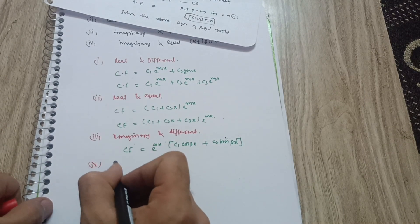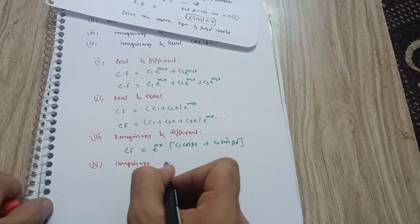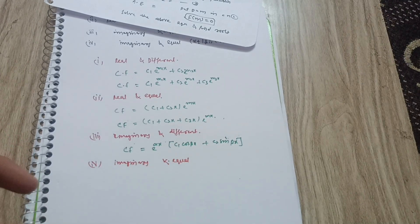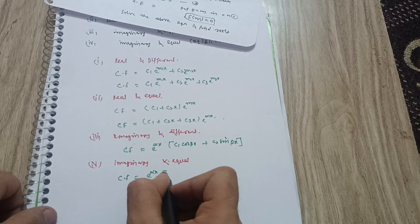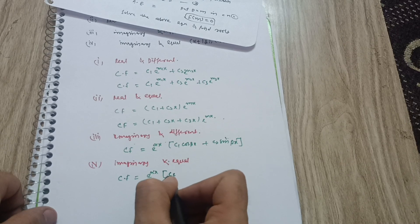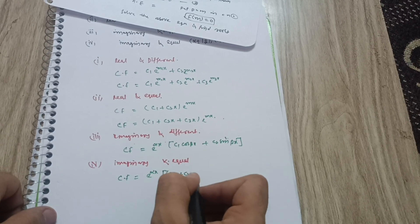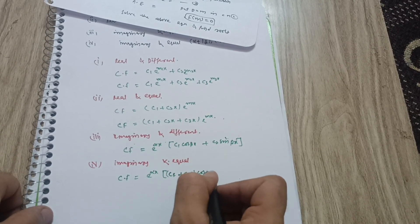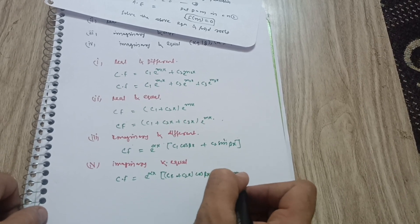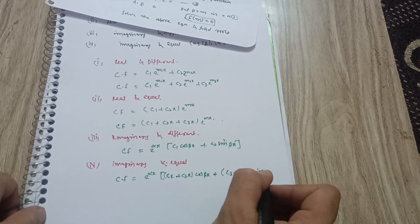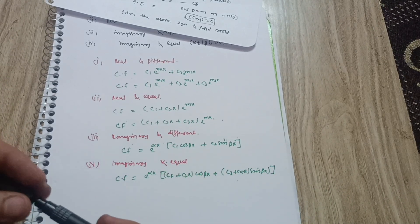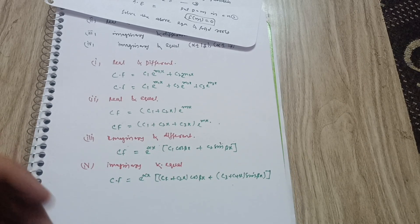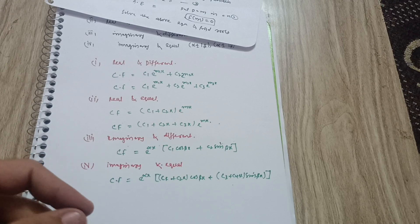For imaginary and equal roots, the complementary function is: CF = e^(αx) · [(c₁ + c₂x)·cos(βx) + (c₃ + c₄x)·sin(βx)]. I hope this video is beneficial for you. This is a very basic lecture on ordinary differential equations. In the next video we will solve questions from the module question paper. Thanks for watching.